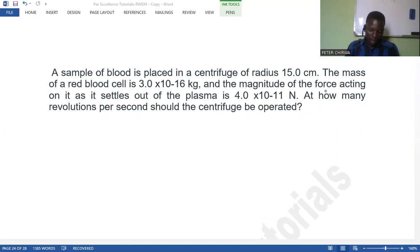A sample of blood is placed in a centrifuge of radius 15 centimeter. The mass of the red blood cells is 3.0 times 10 to the power negative 16 kg, and the magnitude of the net force acting on it as it settles out of the plasma is 4 by 10 to the power negative 11 newton. At how many revolutions per second should the centrifuge be operated?